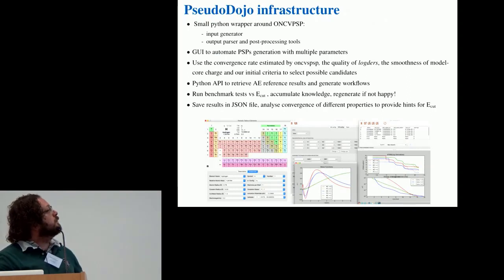This is a very brief description of the PseudoDojo infrastructure. First of all we have some Python code that wraps the ONCVPSP generator by Don. The code generates input files, is able to parse the output and post-process the results.